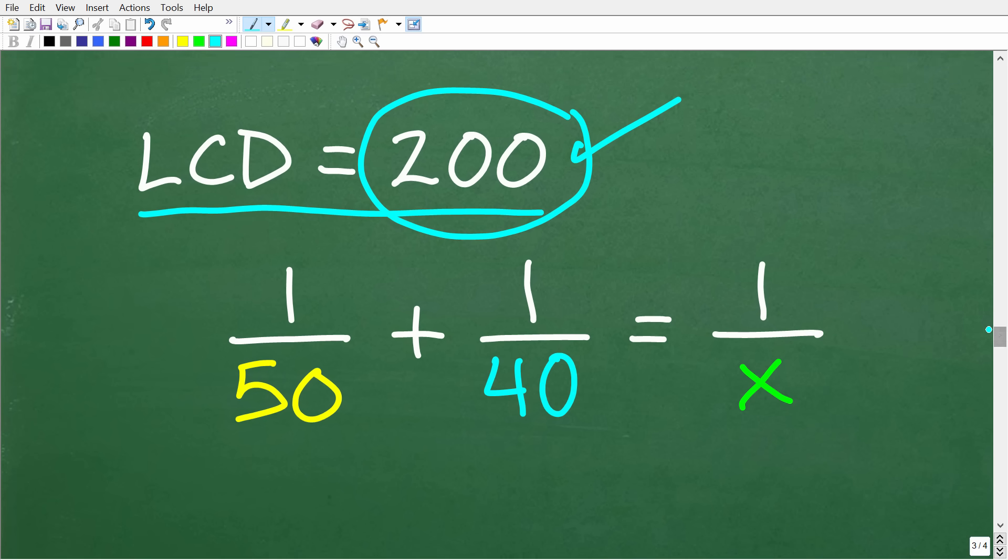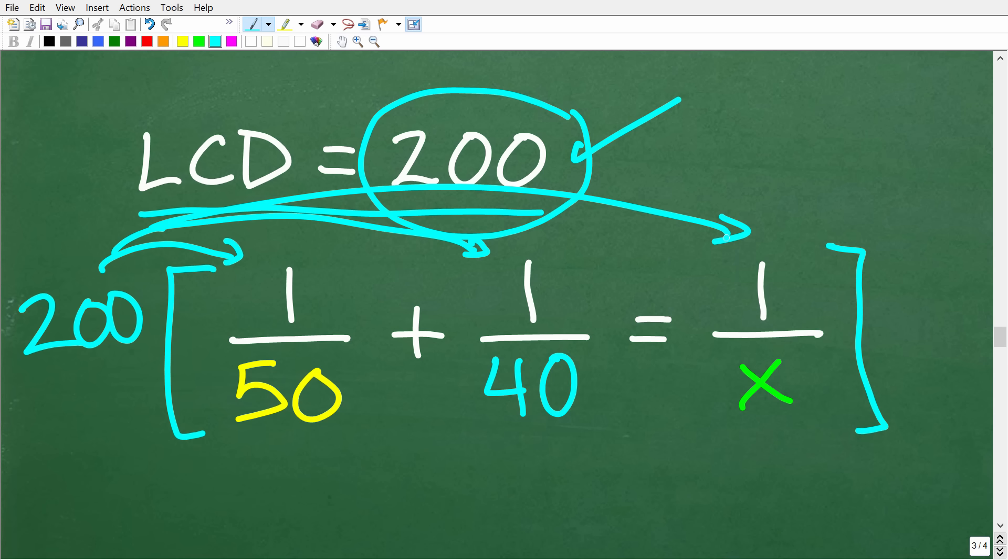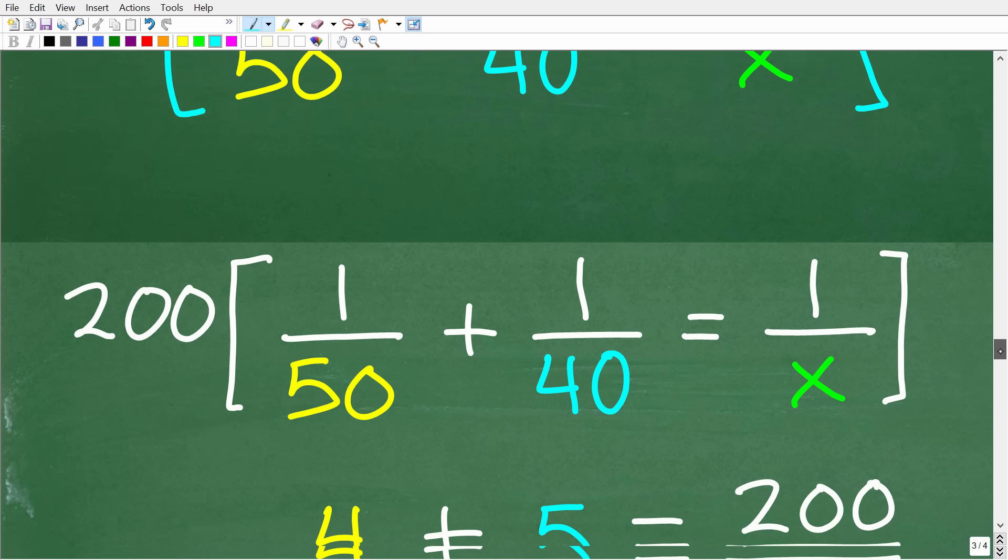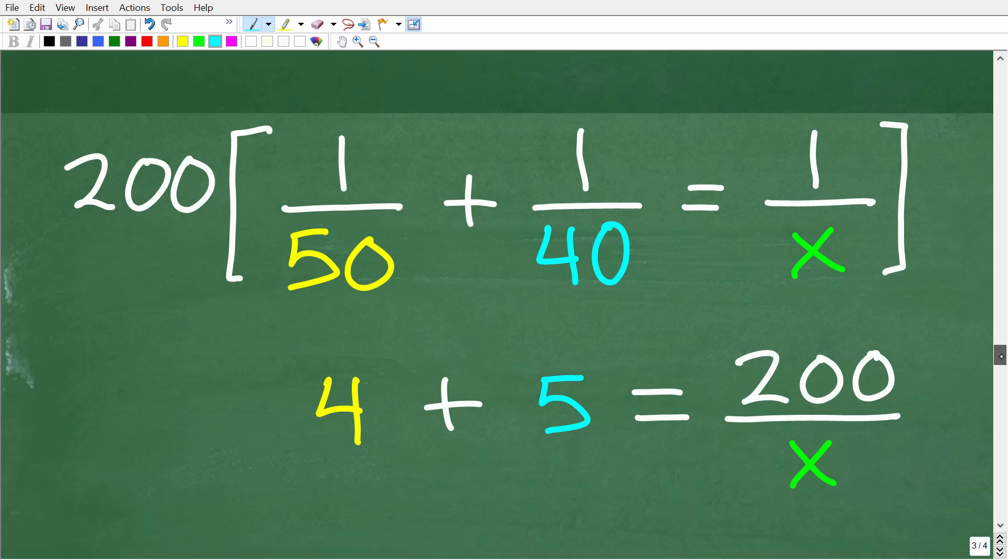So, if you want to kind of pause the video and see if you can do this algebra on your own, it will look like this. You're going to basically put grouping symbols around the entire equation and multiply 200 by each term in the equation. So, let's go ahead and see that work right now.